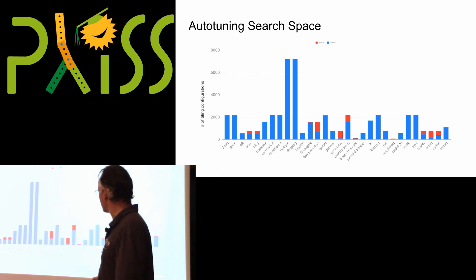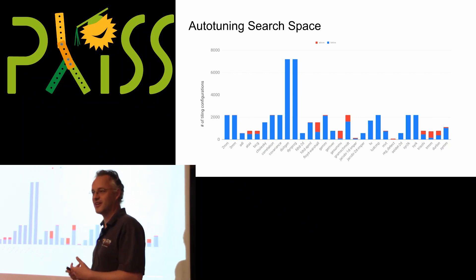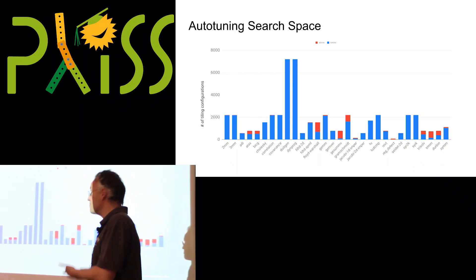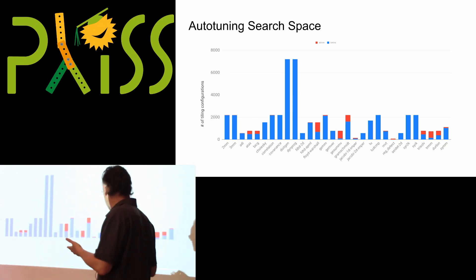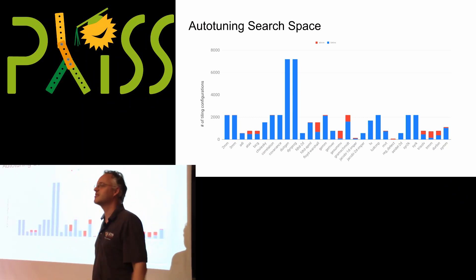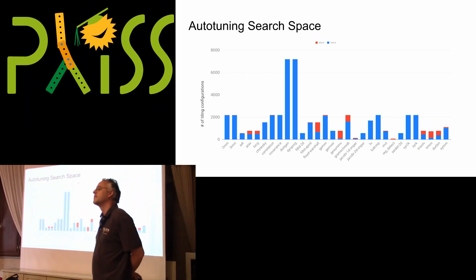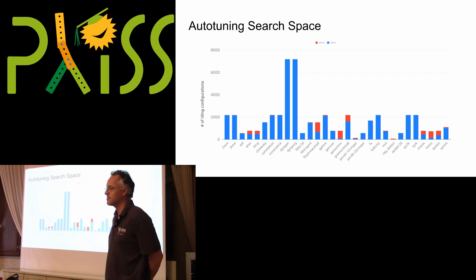If you look at this graph, it compares the state-of-the-art heuristics for guessing the right tile sizes with what auto-tuning gives you on top. The heuristic is actually pretty good — everything in blue represents configurations worse than the heuristic, and everything in red represents improvements you can get through auto-tuning. Depending on the benchmark, you may or may not need it. Auto-tuning is compile-time: you recompile many times before converging on the right parameters.